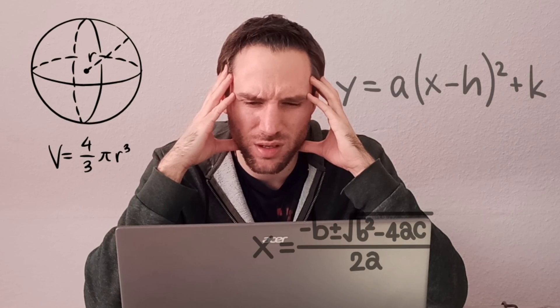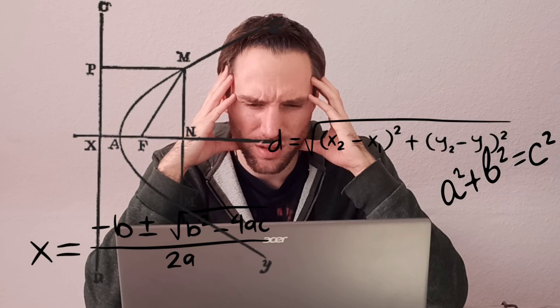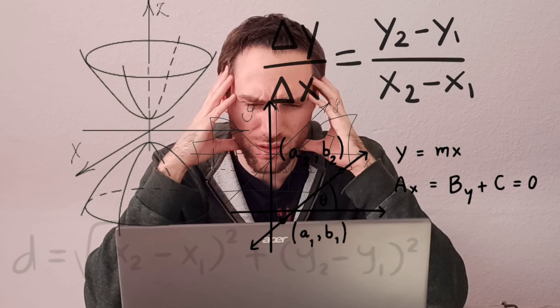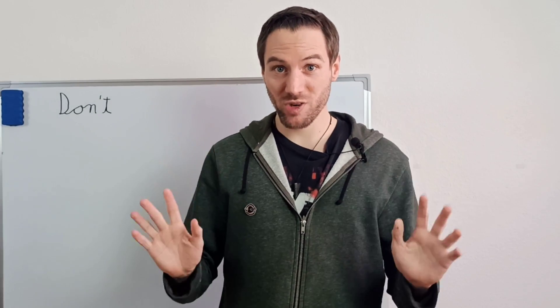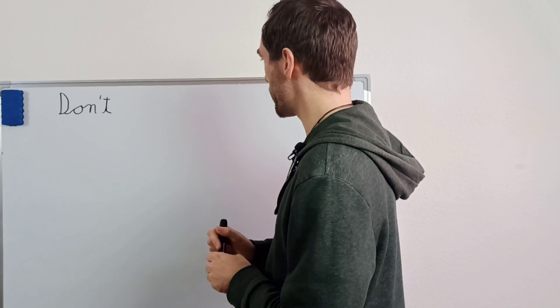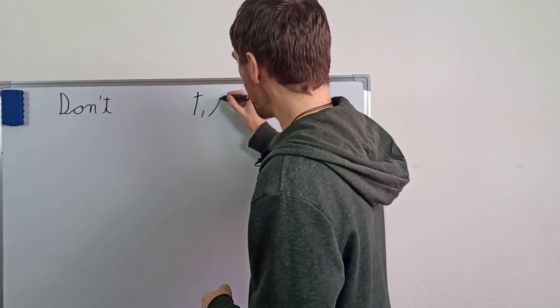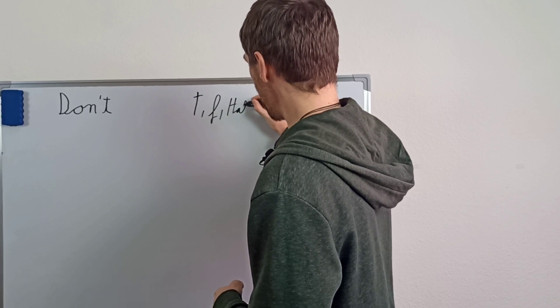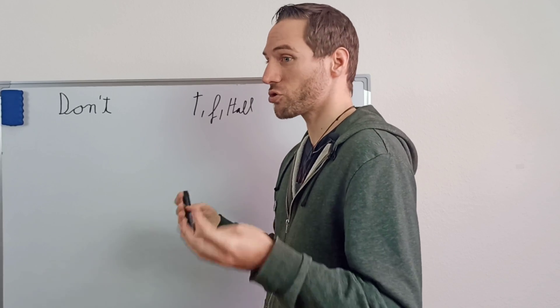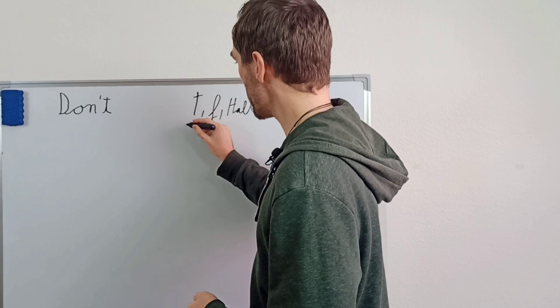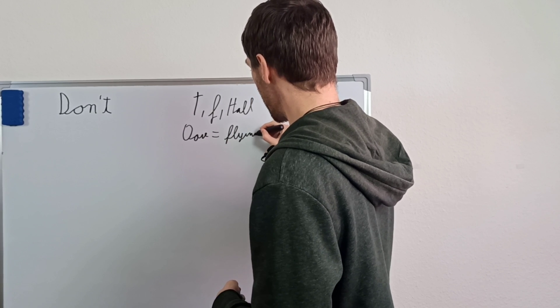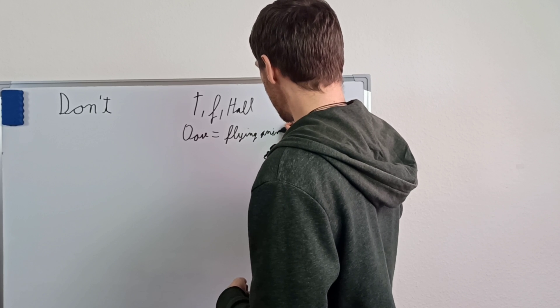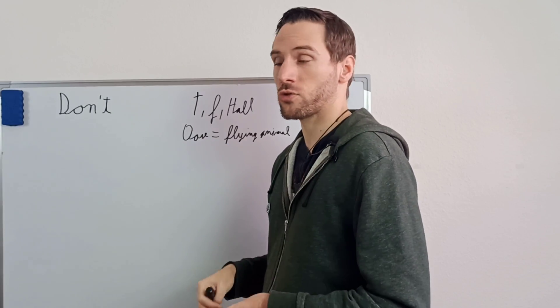Definition 4: the formal world of f, the ground truth function. It is a set where we have a function that completes a prompt to produce a factual statement. Let's break it down with an easy example. We're defining t, f, and hallucinations. T is a fact, a ground truth — for example, dove equals flying animal. That's a ground truth T.